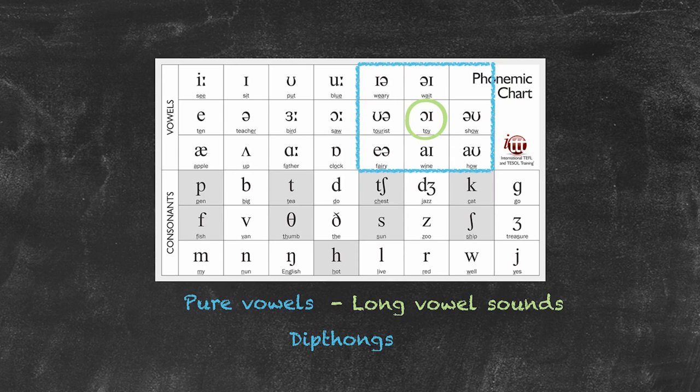We can even see the difference when we really analyze how we're making that sound. That sound again is oy, oy. It requires a movement in the mouth in order to be made, as well as all diphthongs requiring that movement in the mouth because there are actually two different sounds coming together.